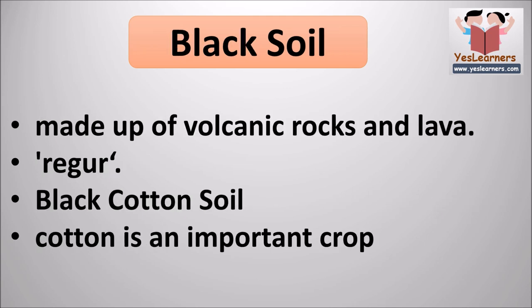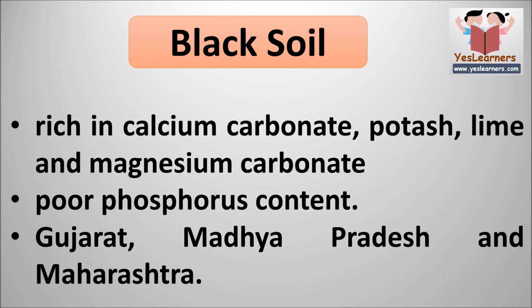Black soil is made up of volcanic rocks and lava. It is also known as Regur soil and black cotton soil, as cotton is an important crop grown in this type of soil. Black soil is rich in calcium carbonate, potash, lime and magnesium carbonate, but has poor phosphorus content. It is mostly found in areas such as Gujarat, Madhya Pradesh and Maharashtra.